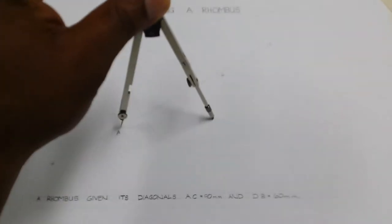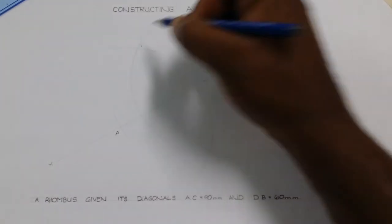Keeping the same radius—very important—we move to our second point, which is point A, and we inscribe another arc which will intersect with our first arc drawn from point C, producing two very vital points: point one and point two.